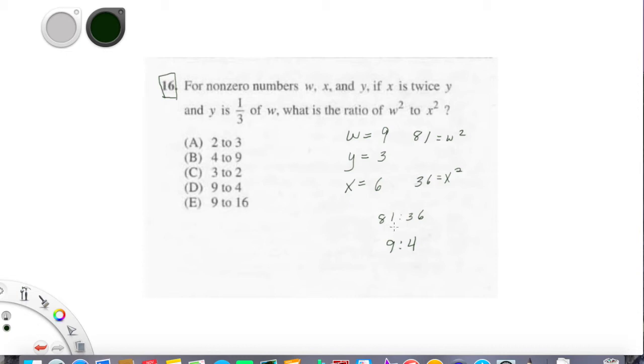So w squared to x squared, let's be careful here, this is our w and this is our x squared. The answer is 9 to 4. I want you guys to be really careful because, look, we have 4 to 9 here. So be really careful and make sure you know which one's which.